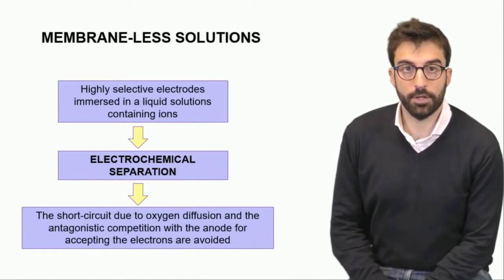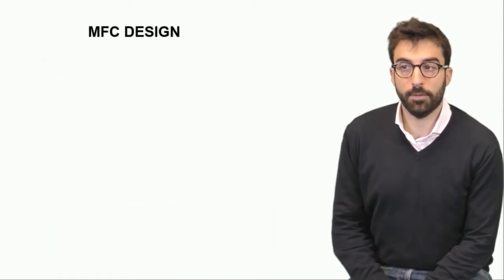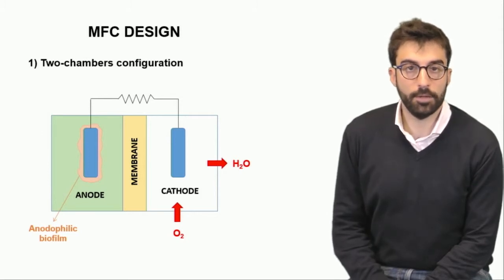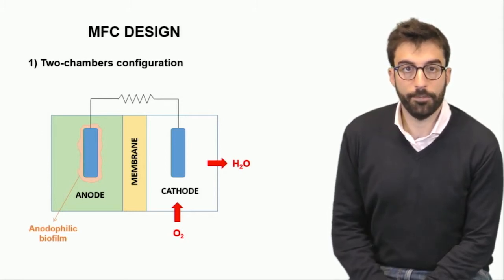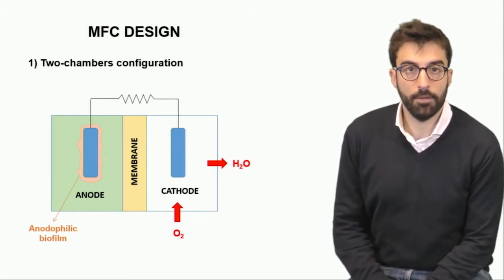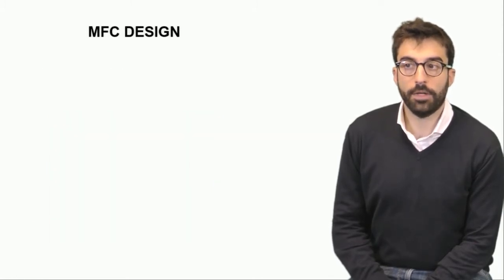That brings us to three potential designs for microbial fuel cells. The first one is the so-called two-chamber configuration in which we have anode, cathode, and a membrane, and we have the fuel or the biological product in the anode chamber, and at the cathode we can flow oxygen or air directly.